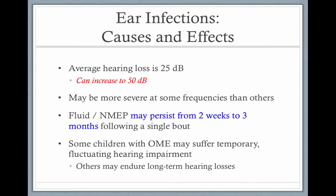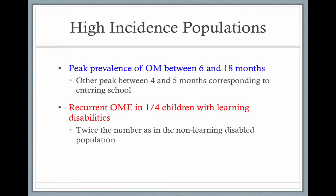The average hearing loss caused by an ear infection is 25 decibels, and it can increase up to 50 decibels. We want children to be hearing at 15 dB or better because they're learning language, so good hearing is critical. Twenty-five dB may not sound bad, but remember it's a log scale, and these are kids learning language — so it is significant. The fluid could persist for two to three weeks, giving the child a mild to moderate hearing loss for an extended period. The peak prevalence of otitis media is between 6 and 18 months, and then it occurs again when a child enters school.